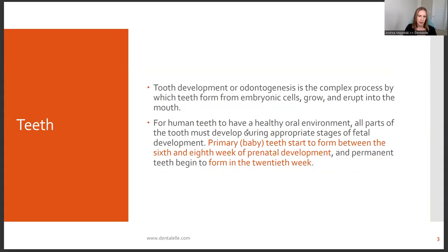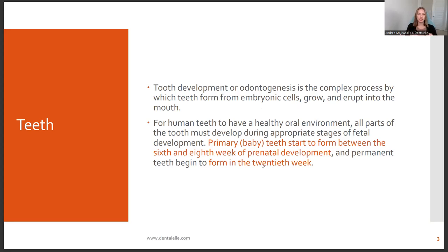Tooth development, or odontogenesis, is the complex process by which teeth form from embryonic cells, grow, and erupt into the mouth. For human teeth to have a healthy oral environment, all parts of the tooth must develop during appropriate stages. The baby teeth start to form between the sixth and the eighth week of prenatal development, and the permanent teeth begin to form in the twentieth week. These are key points to know.